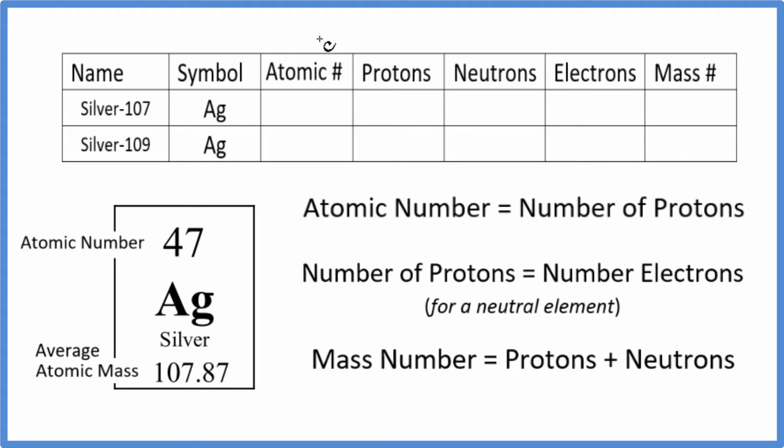So let's first find the atomic number here for Ag, for silver. This is the atomic number on the periodic table. So 47, that's the atomic number. And that's the identity of silver. So it doesn't matter which isotope you have. If you have silver, atomic number is 47.